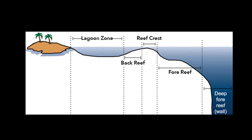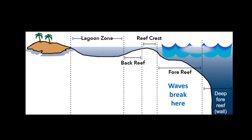Reefs have many parts, but they can be summed up in a few general terms. The deep fore reef is the edge of the reef that drops off into the open ocean. The fore reef is the flatter area where the waves break. The reef crest is a shallow part of the reef that can be above the water at times. The back reef slopes down into the lagoon, which is a calmer area that generally has few waves breaking.